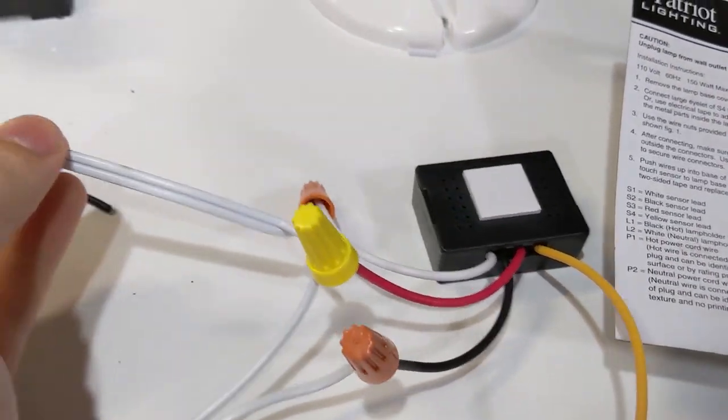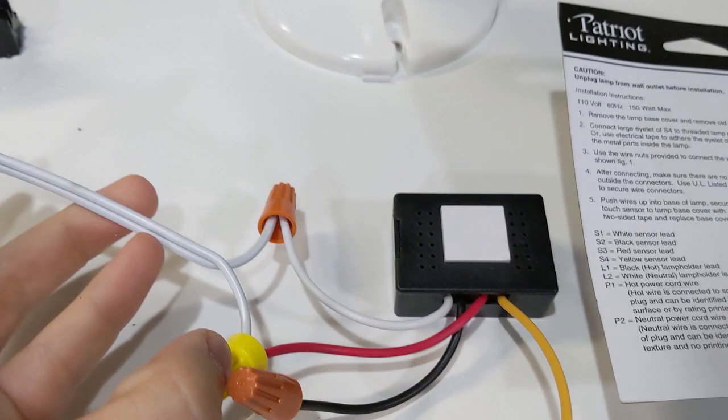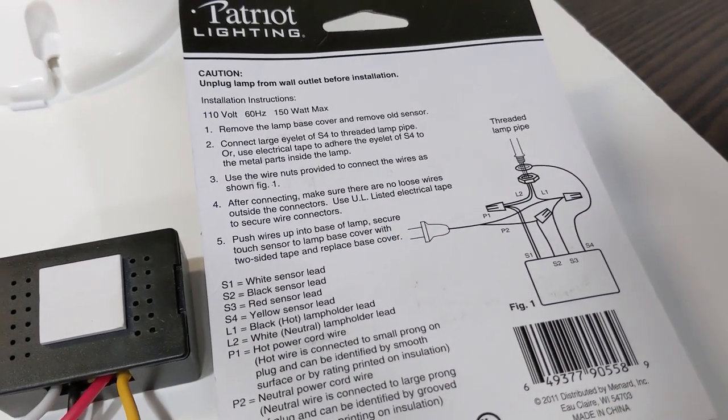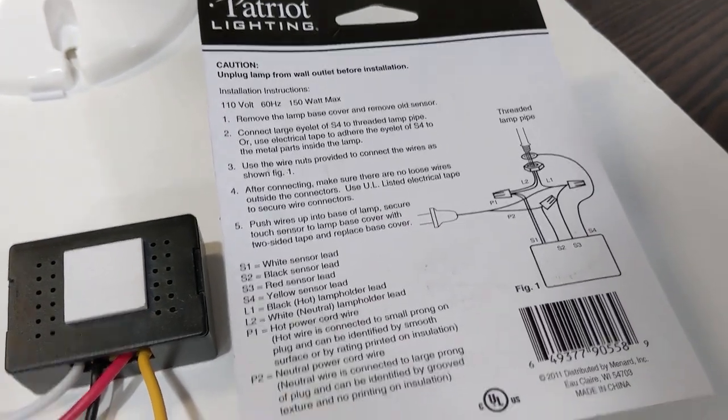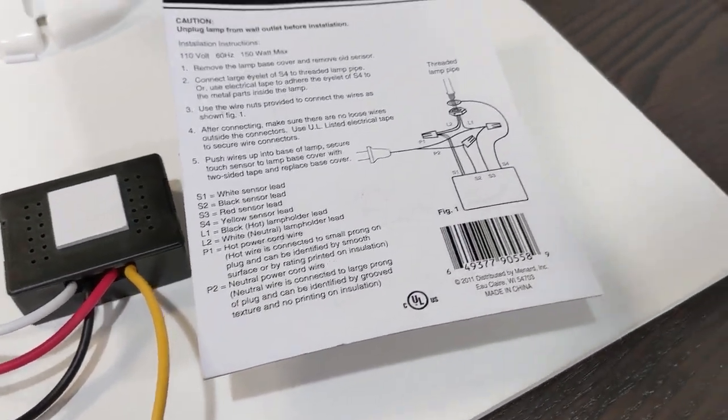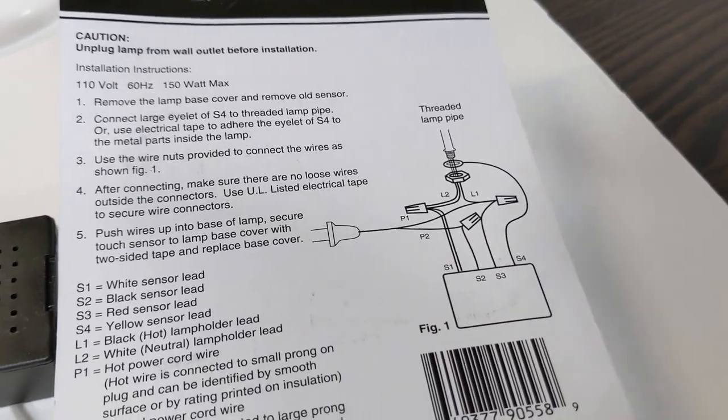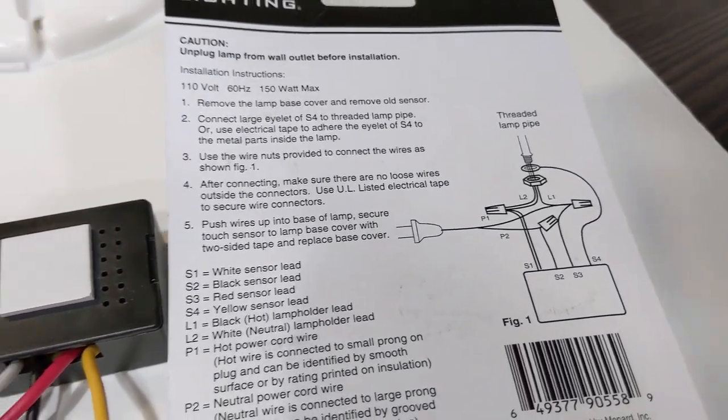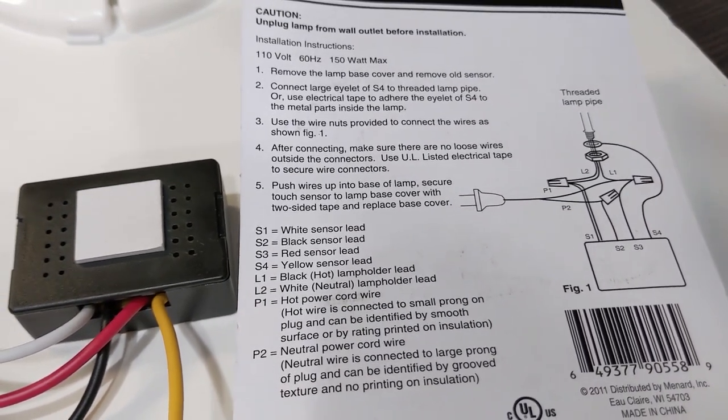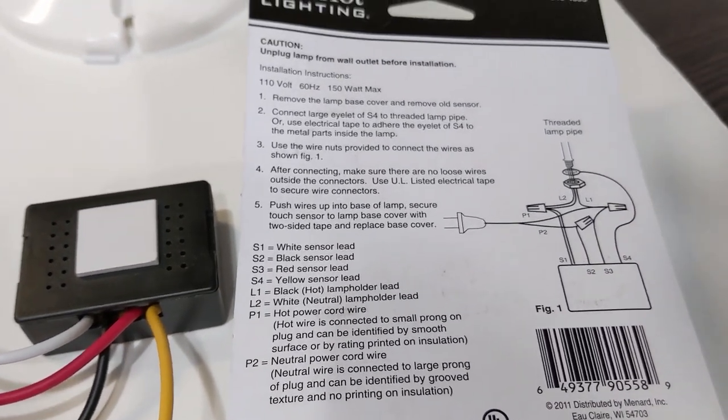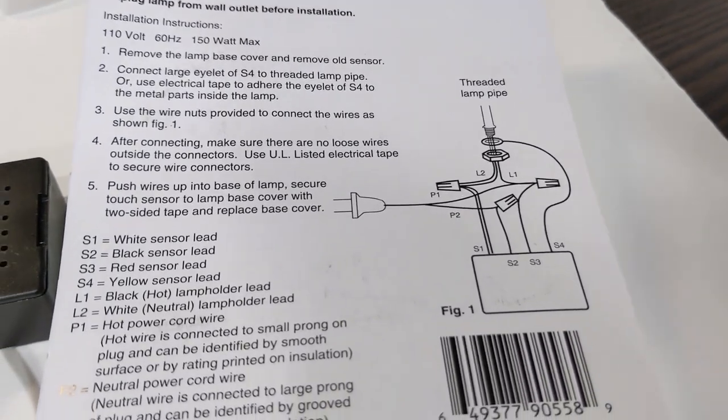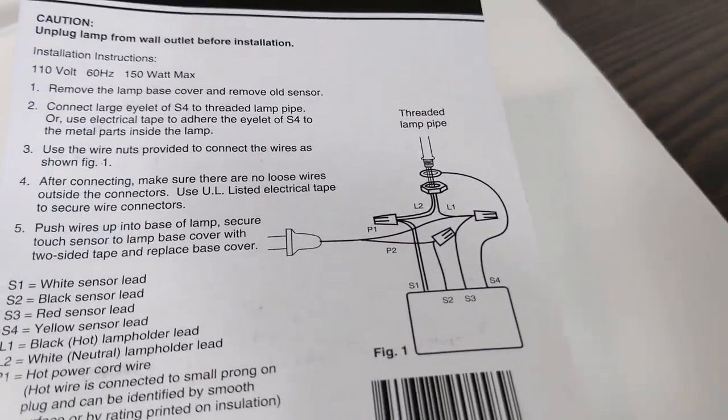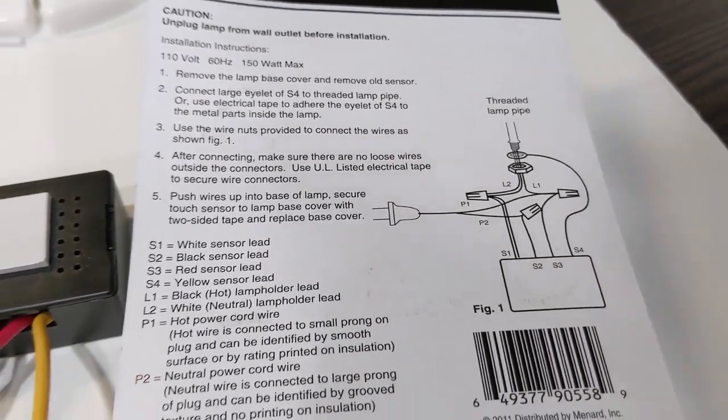Here's the lamp. This is going to the socket. It is white of the neutral. That's L2 going to S1. Yes. And then the other side, L1, is going to the red wire. That's S3. Good. And then hot. Hot power wire, P1. Yes. And then black from the actual module is going to S2 is going to P2, which is neutral. That's so stupid.